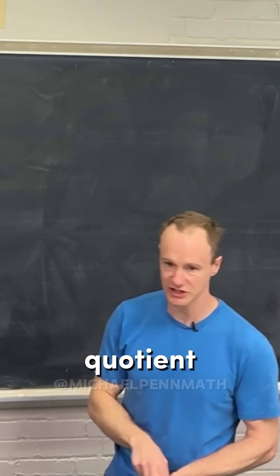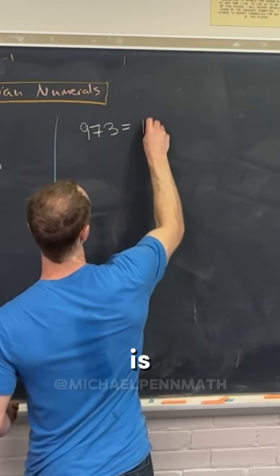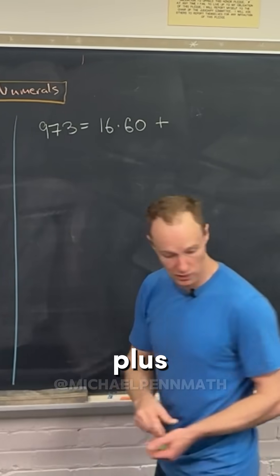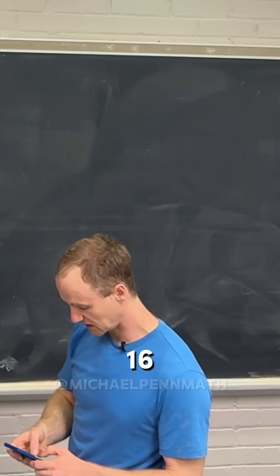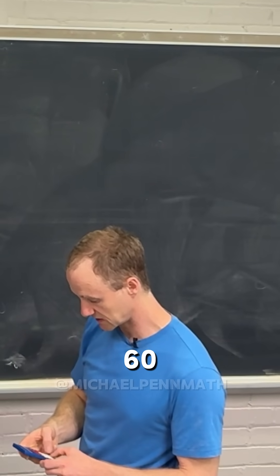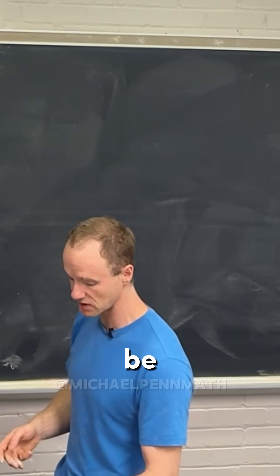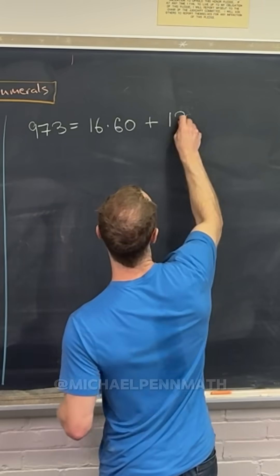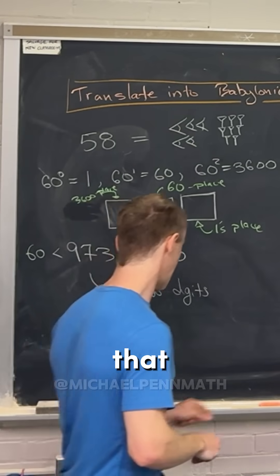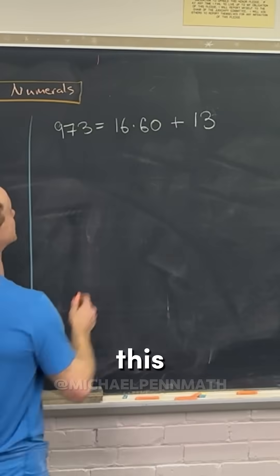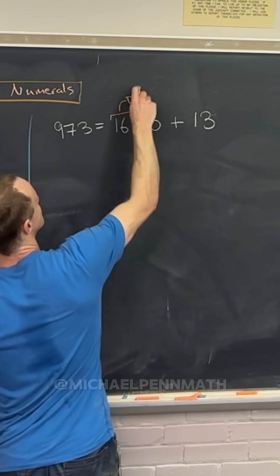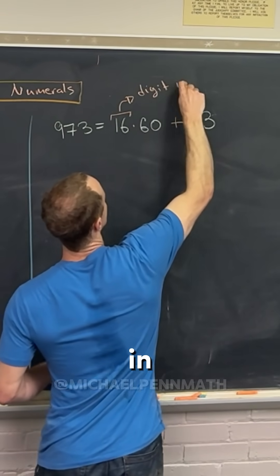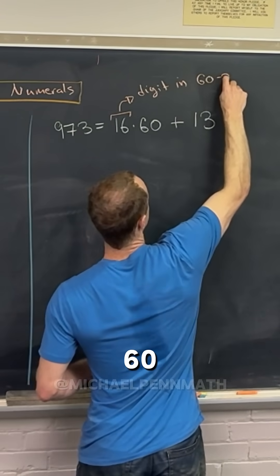That gives us a quotient of 16. So this is 16 times 60 plus — 16 times 60 is 960, so that's going to be a remainder of 13. So that means that 16 will be the digit in the 60s place.